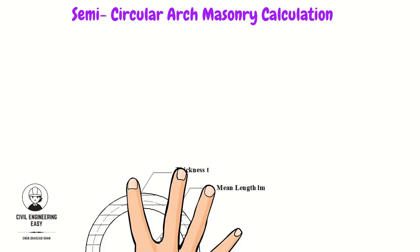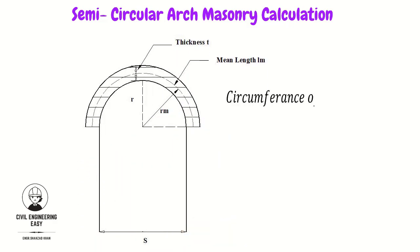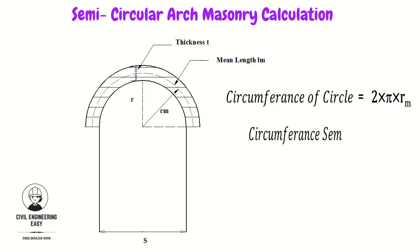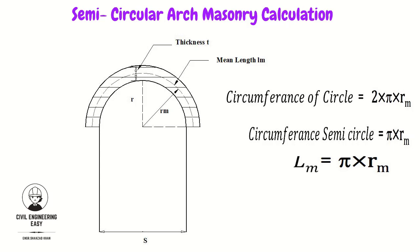As we know, the circumference of a circle is equal to 2πR. But here we have a semicircular arch, so the circumference will be equal to π·Rm, where Rm is the mean radius. So the mean length is equal to π·Rm. By putting the values of Rm into the equation, mean length equals π times (S/2 + T/2).